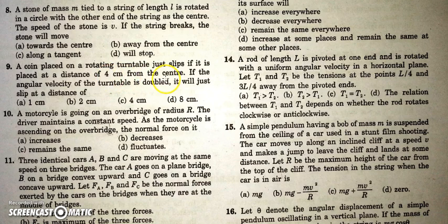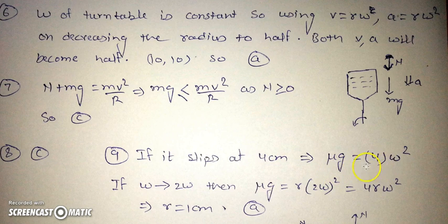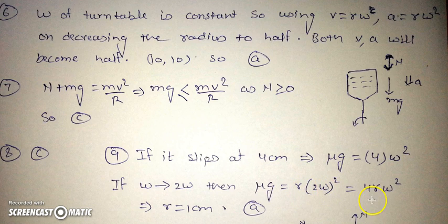A coin is placed on a rotating turntable and just slips at a distance of 4 cm from the center. If the angular velocity of the turntable is now doubled, at what distance will it just slip? On doubling ω, the acceleration becomes four times. The maximum friction acceleration equals r·ω². Comparing: 4·ω² = r·(2ω)², so r = 1 cm. The coin will now slip at 1 centimeter.